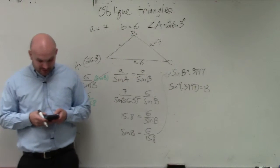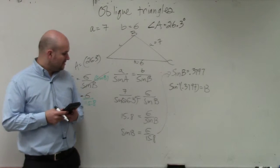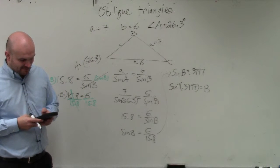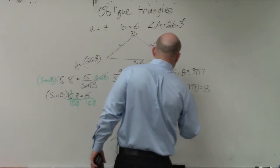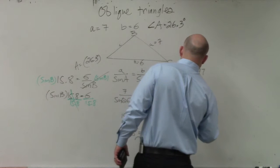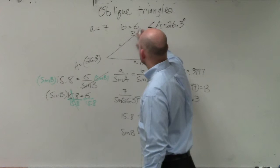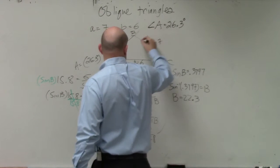So now, all I simply do is sine inverse of my answer, my decimal, and I get 22.3. So now I know that B is, I could actually probably put these in there, right?